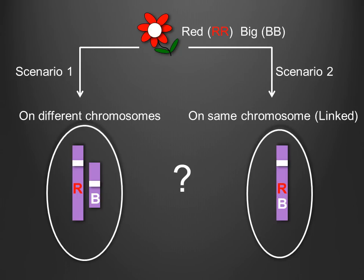Essentially, you are being asked to distinguish between the two possible scenarios for the chromosomal arrangement of the two genes. In one scenario, the genes could be located on separate chromosomes, as depicted on the left. In an alternative scenario, as depicted on the right, both genes could be located on the same chromosome.